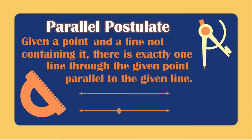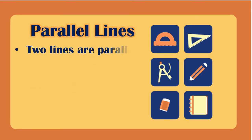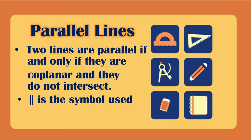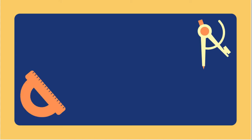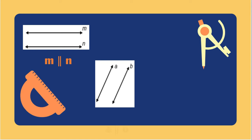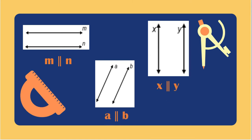Here is a picture of parallel lines. The two lines are parallel if and only if they are coplanar and they do not intersect. Coplanar means they are at the same plane, and the symbol for parallel is this symbol. Examples of parallel lines include: M is parallel to N, A is parallel to B, and X is parallel to Y.